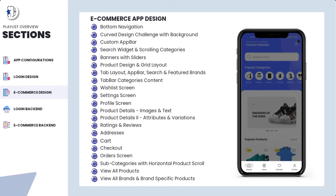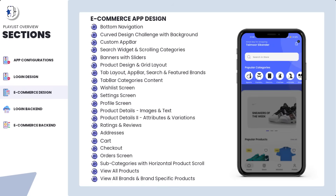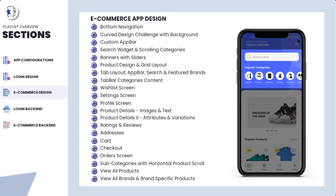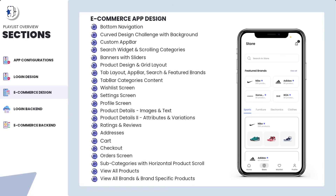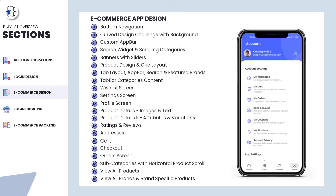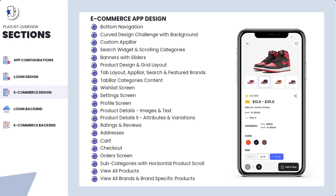In the e-commerce design we will first create a bottom navigation with four menus, then a curve design, a custom app bar used throughout the application, categories, a search bar, banners with sliding dots, and a product grid. For the store page we will create tabs, a brands button to view all brands, and category content with a brand section. After that we have the wishlist, settings page, and profile page.